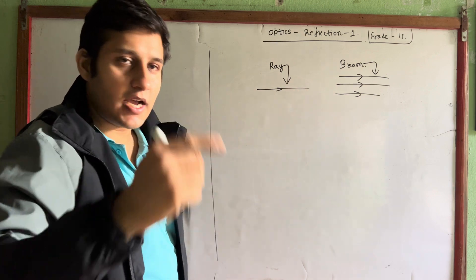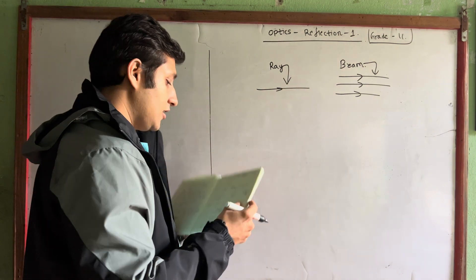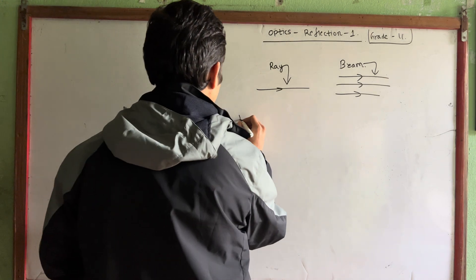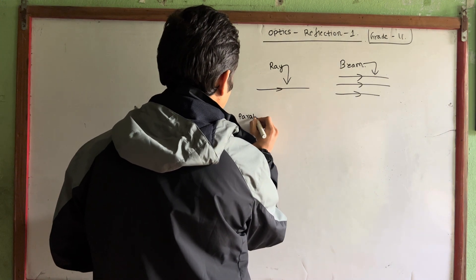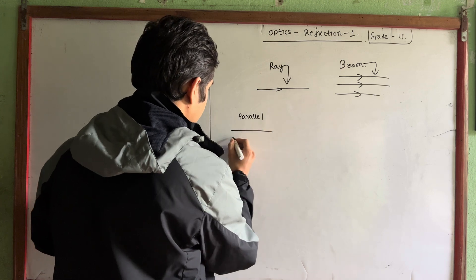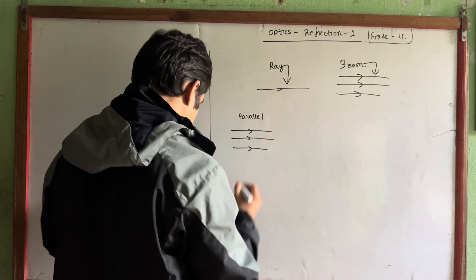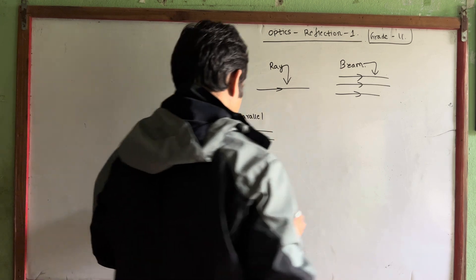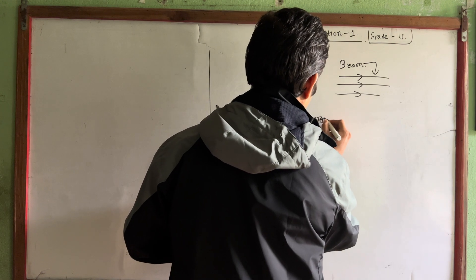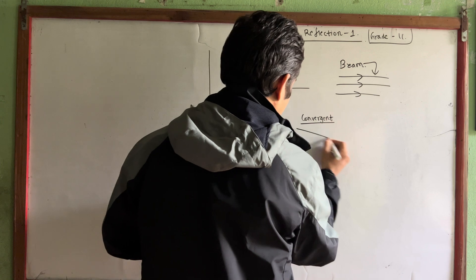There are three types of beam. The first is parallel. The second is convergent.